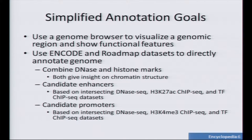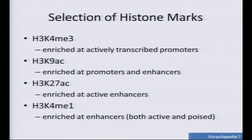DNase-seq may include regulatory elements besides enhancers and promoters, but for a DNase peak that has an enrichment of, for instance, H3K27ac, you have a pretty good likelihood that it's actually going to be an enhancer. We're going to build up an annotation on DNase-seq and histone marks and display it in the browser. Based upon data availability, we're using four different histone marks: H3K4me3 to annotate promoters, H3K9ac for promoters and enhancers, H3K27ac for enhancers, and H3K4me1.